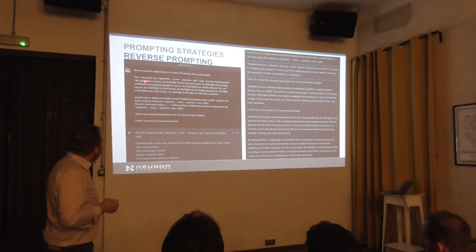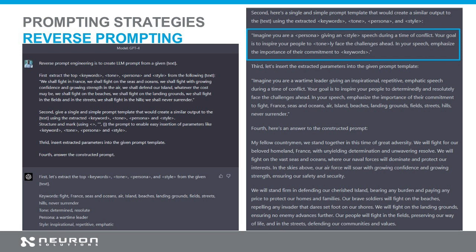Here is a bigger example. I told the model: first, what are the top keywords, tone, personal style from the following text — and here we have the text. If you recognize it, it's Churchill's speech. If you know Iron Maiden, you may have heard this speech a few times. So this is the text. Then second: give a single, simple prompt template — it's important I asked for a template — that would create a similar output to the text, using the extracted keywords, personal style, and so on.